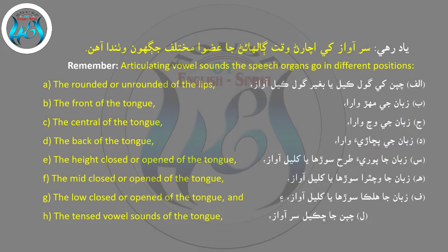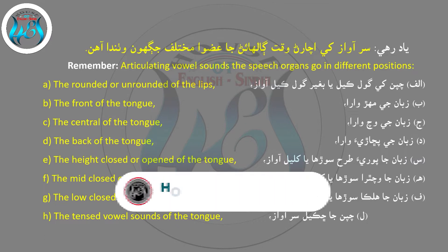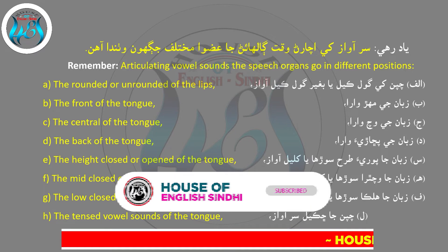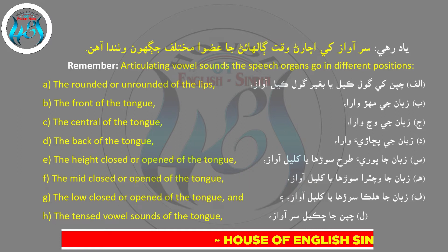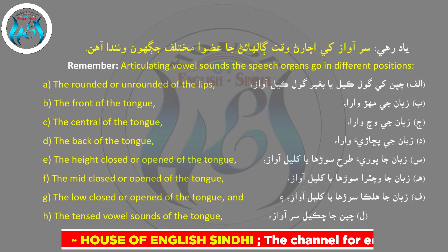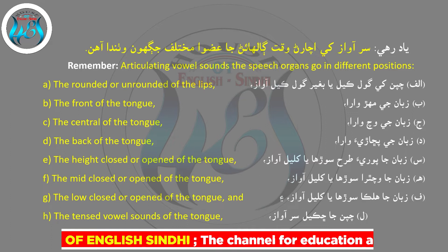Remember, articulating vowel sounds, the speech organs go in different positions: the rounded or unrounded of the lips, the front of the tongue, the central of the tongue, the back of the tongue, the height closed or opened of the tongue, the mid closed or opened of the tongue, the low closed or opened of the tongue, and the tensed vowel sounds of the tongue.